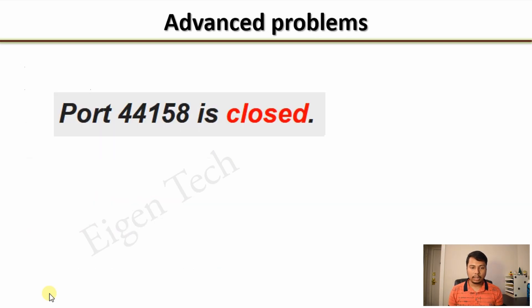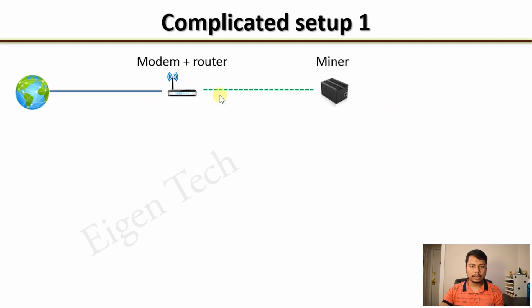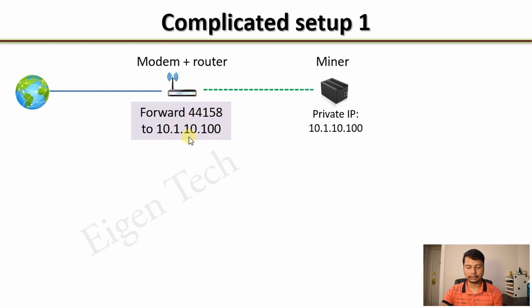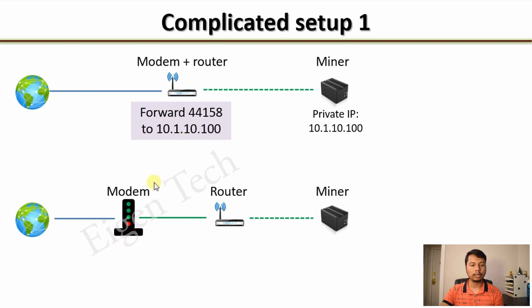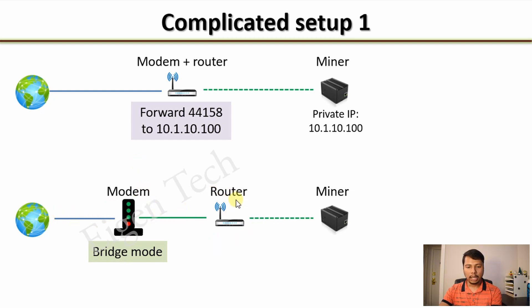If you performed all those steps but your port is still closed, let us dig deeper. The common setup is a modem-router at home connected to the ISP, with your Helium miner connected to the modem. Your miner will have a private IP, for example 10.1.10.100, and your modem will have a public IP — all you need to do is forward port 44158 to that private IP. However, if you have a separate modem connected to the ISP and a separate router, you should put the modem in bridge mode so the router gets the public IP, then simply forward port 44158 to the miner's private IP.